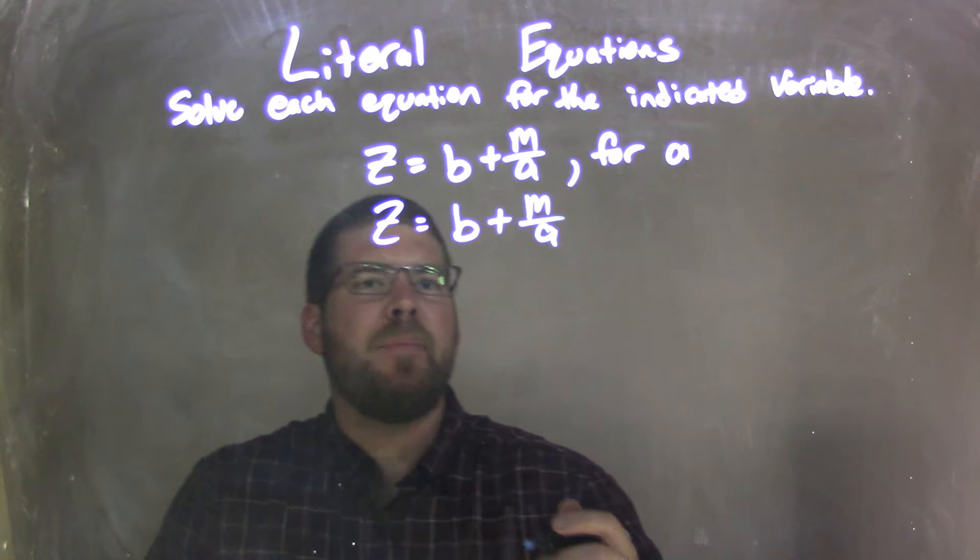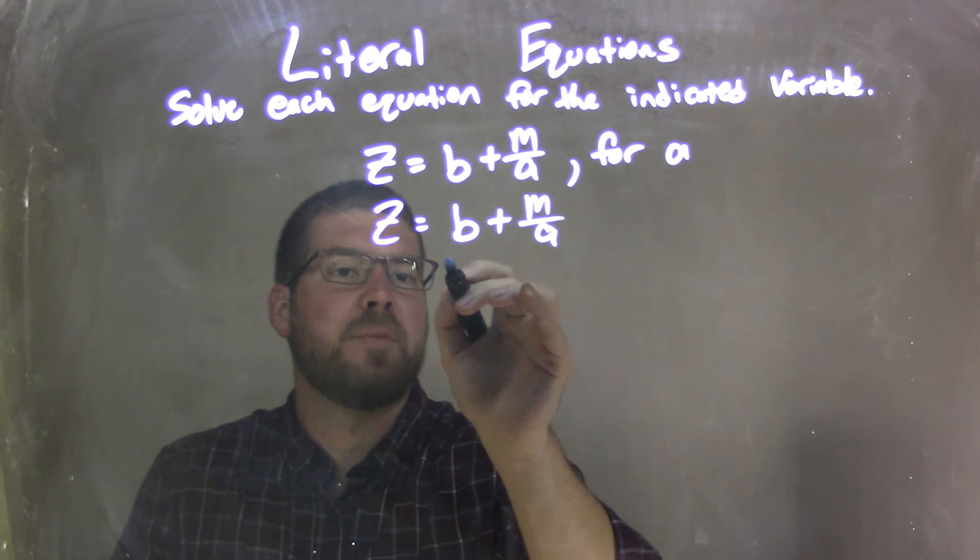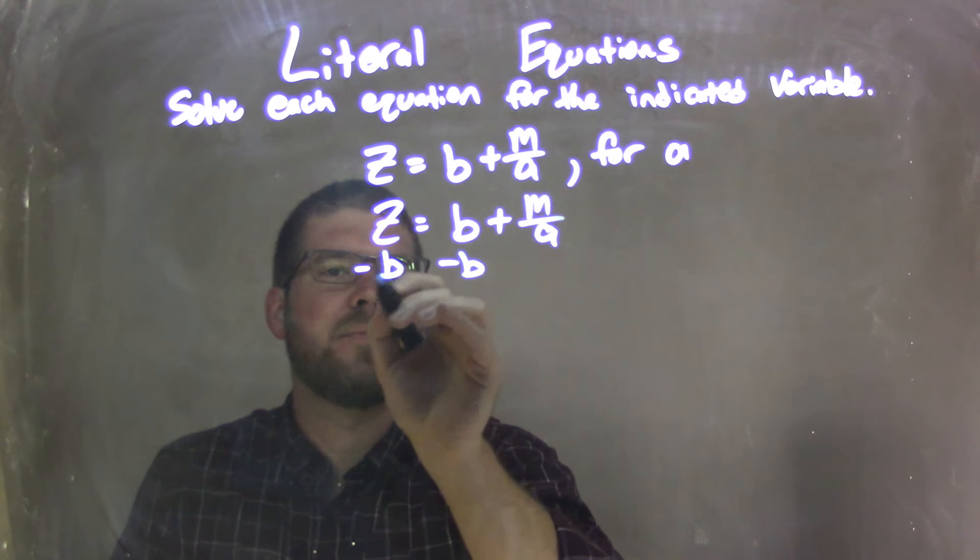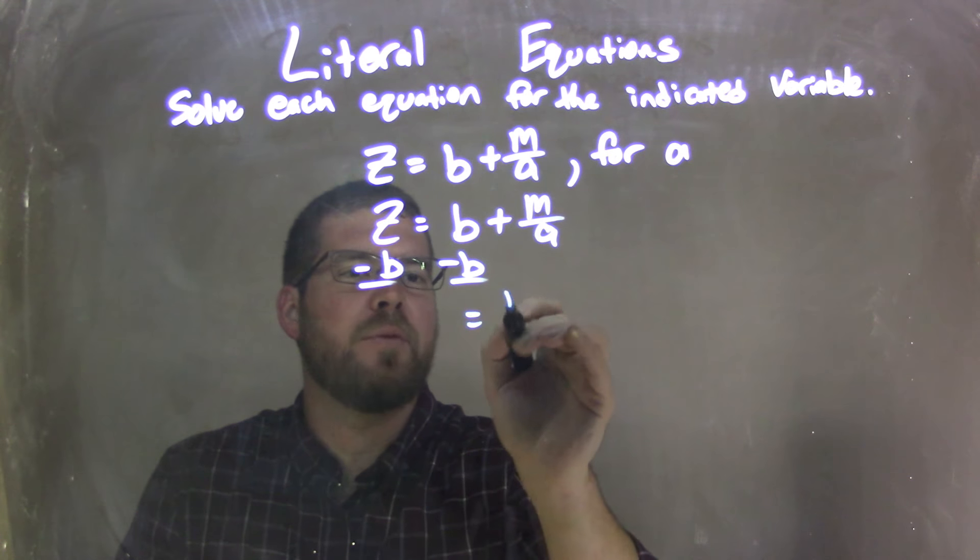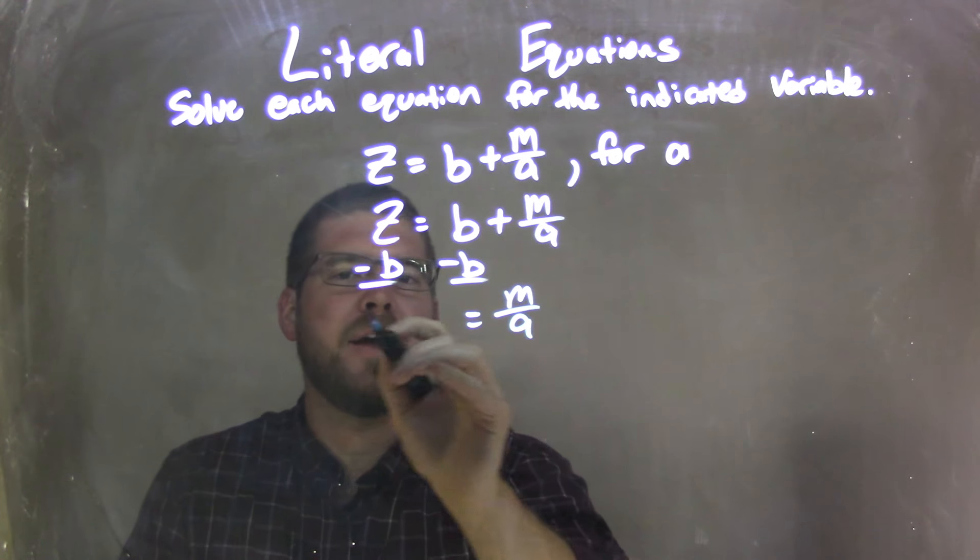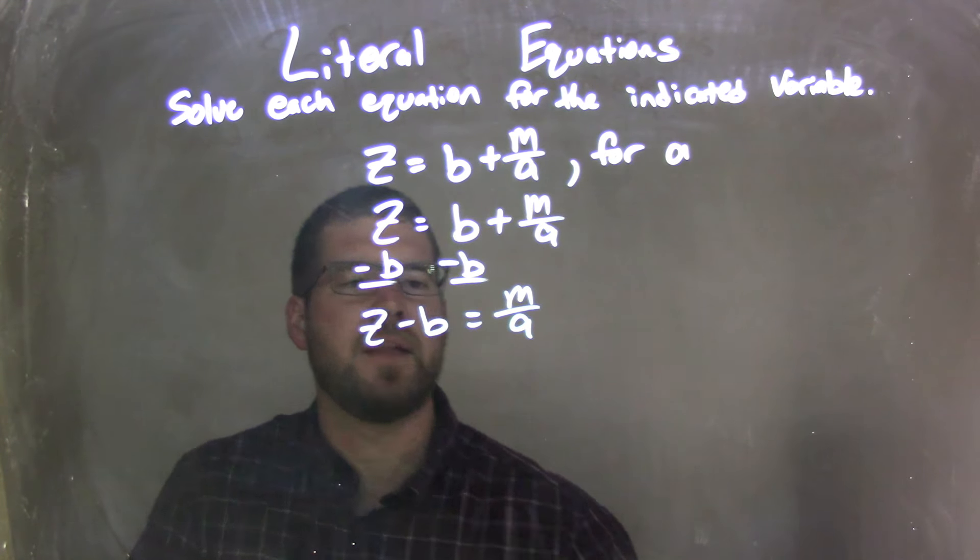Well, to go from there, to get a by itself, I'm actually going to subtract b to both sides first. That leaves me with m over a by itself on the right, and I have z minus b on the left.